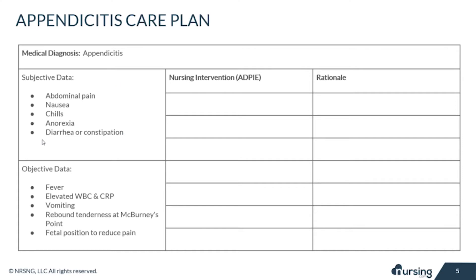Now let's look at the objective data. The patient might experience a fever or elevated white blood cells and CRP due to inflammation and infection. This will worsen when it ruptures. A patient may also experience vomiting due to that GI irritation and infection.